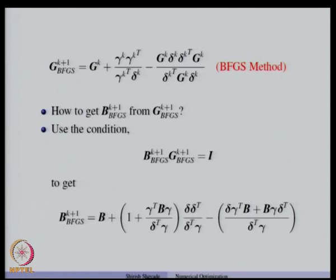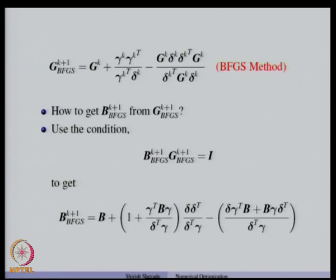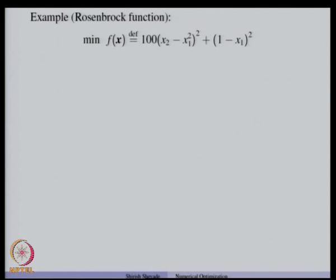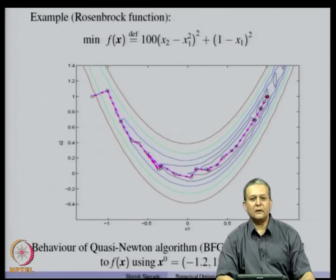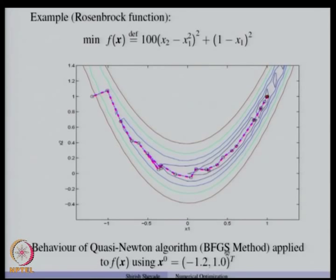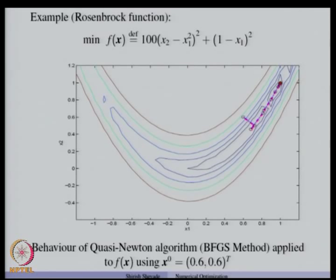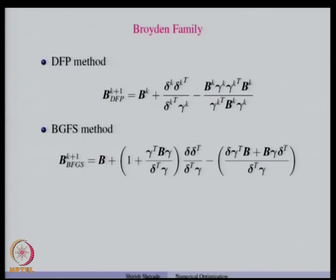This is called the BFGS update formula for the matrix B. One can derive similar formulas given any update formula for the matrix B. Applying the BFGS method to the Rosenbrock function shows similar behavior to the DFP method. So far we have studied two rank-2 update formulas: the DFP formula and the BFGS formula.